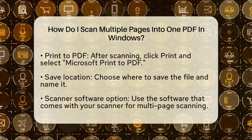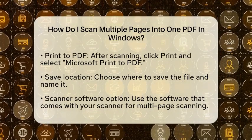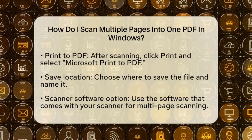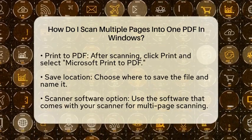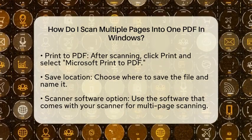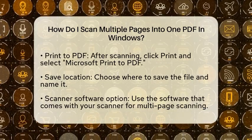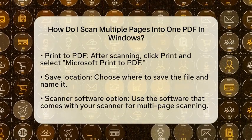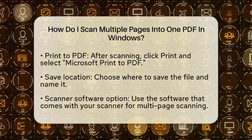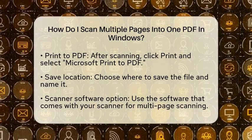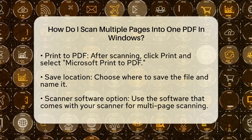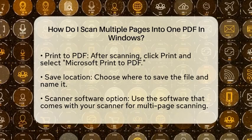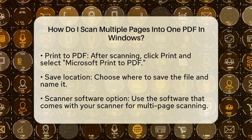Another option is to use the software that comes with your scanner. Many scanners support Twain or Windows Image Acquisition drivers, which allow for multi-page scanning directly into one PDF. Open your scanner's software, which might be called something like OneTouch or the specific software from your scanner brand. Look for an option that allows you to scan multiple pages. You can also enable a setting that prompts you before each scan. After scanning all the pages, save them as a single PDF file.